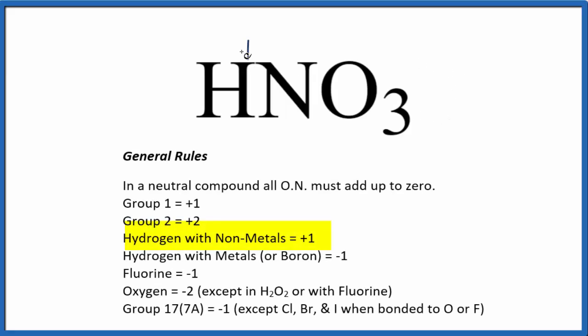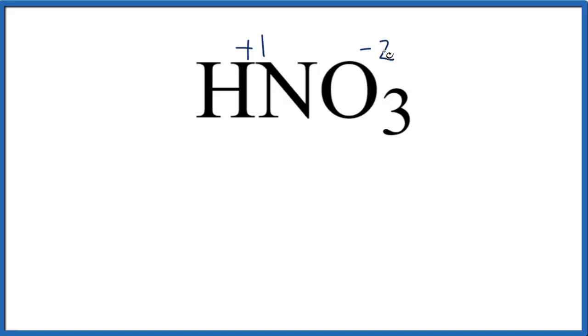So we know hydrogen, plus one when it's bonded to nonmetals, and then oxygen almost always minus two with a few exceptions. When I add up all the oxidation numbers, I have 3 times minus 2, that's minus 6, and minus 6 with a plus 1, that gives me minus 5.